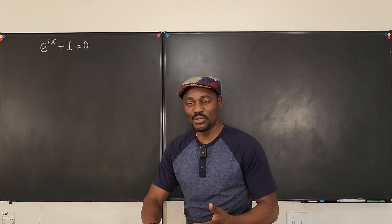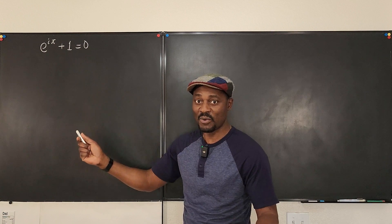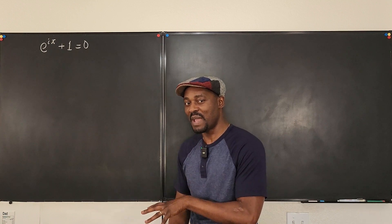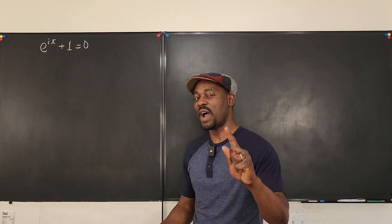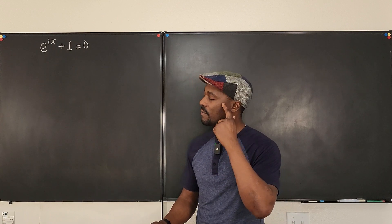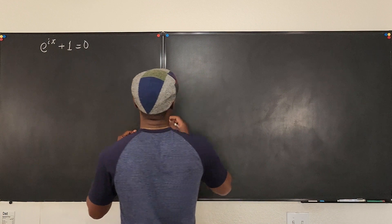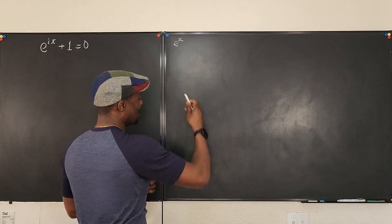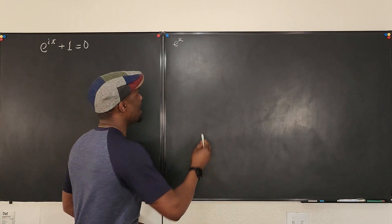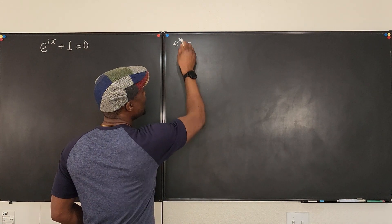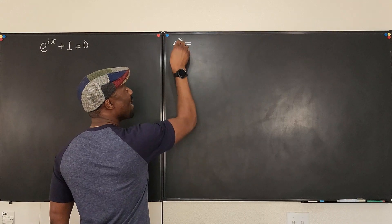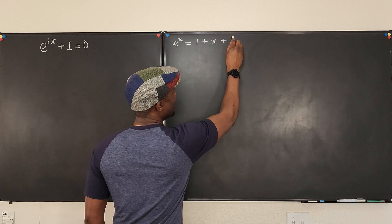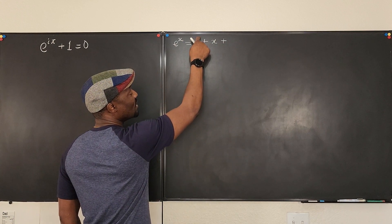If you've already taken differential equations or Calculus 2, you know we have these series for certain functions. I'm going to write three of them without deriving them. So let's write the Taylor series for e^x. Centered at zero, the Maclaurin series for e^x equals — and this is actually a polynomial — you can write e^x as one plus x. This is one times x to the zeroth power, this is one times x to the first power.